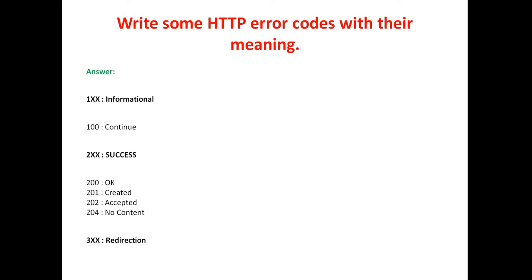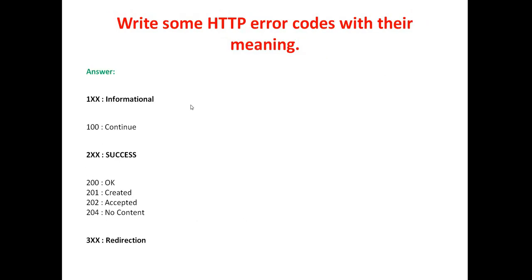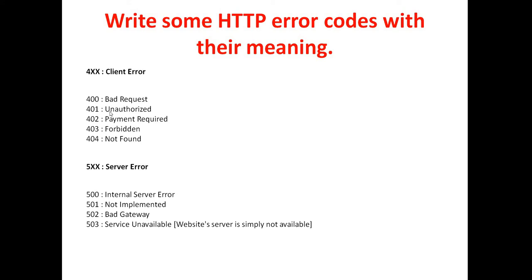The next question is: write some HTTP error codes with their meaning. There are five types of HTTP status code groups starting with 1, 2, 3, 4, and 5. 1xx means informational — for example, 100 means Continue. 2xx means success — 200 OK, 201 Created, 202 Accepted, 204 No Content. 3xx means redirection — these are rarely used. 4xx is client error — 400 Bad Request, 401 Unauthorized, 402 Payment Required, 403 Forbidden, 404 Not Found. 5xx is server error — 500 Internal Server Error, 501 Not Implemented, 502 Bad Gateway, 503 Service Unavailable.